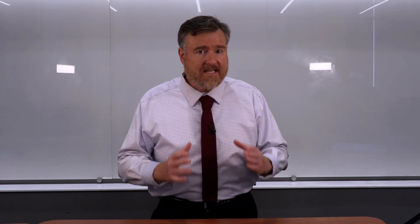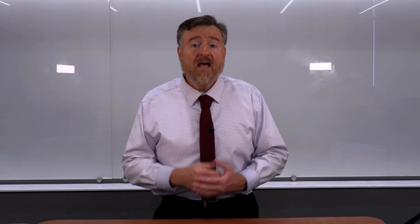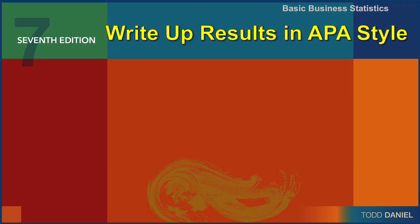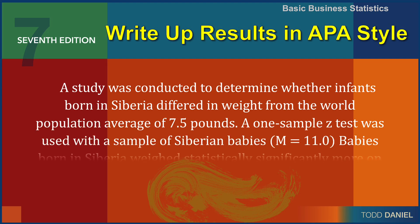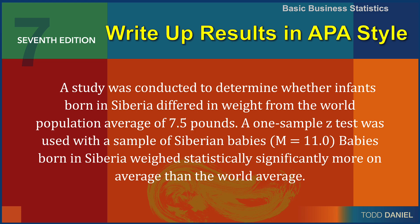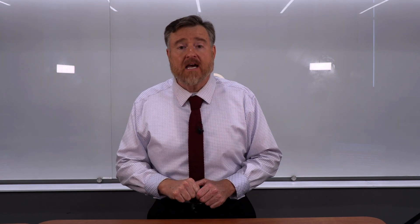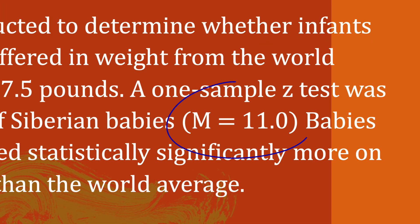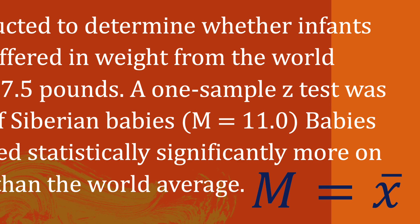Now we must write up our findings in APA style. A study was conducted to determine whether infants born in Siberia differed in weight from the world population average of 7.5 pounds. A one-sample z-test was used with a sample of Siberian babies with a mean of 11. Babies born in Siberia weighed statistically significantly more, on average, than the world average. Note that while we use x-bar to stand for the sample mean, in APA style we write it using a capital M, because it is easier to type than the x-bar symbol.